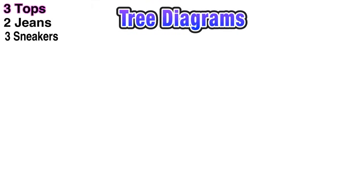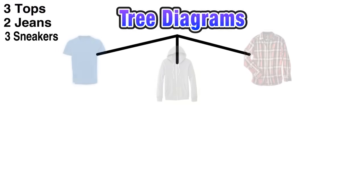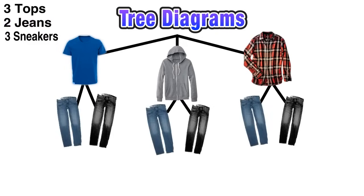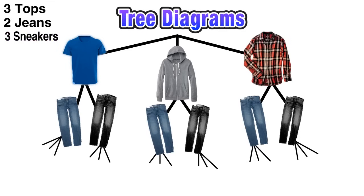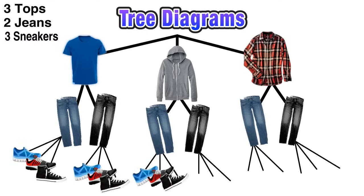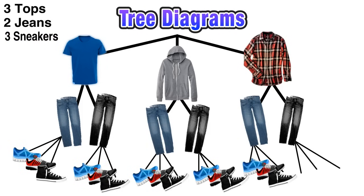With these options in mind we're ready to construct a tree diagram. Starting with tops — he has three choices, so we have three branches: the blue t-shirt, the gray hoodie, and the red plaid dress shirt. Now for each top there are two options for jeans, so we make two branches from each top showing either the blue jeans or the black jeans. And finally each pair of jeans has three options for sneakers, so I draw three branches from each pair and include each sneaker option.